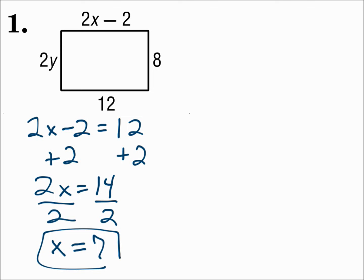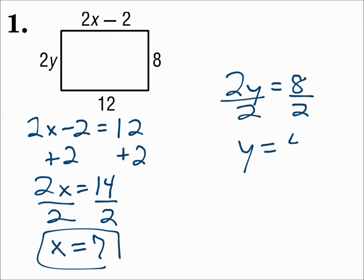Now we need the other pair of opposite sides congruent: 2y equals 8. Divide by 2, and y is 4. So if x is 7 and y is 4, that makes opposite sides congruent, and it makes the figure a parallelogram.